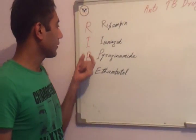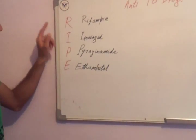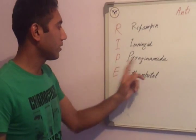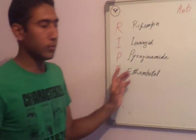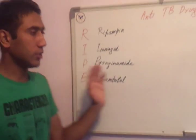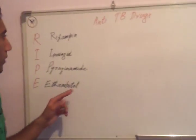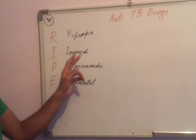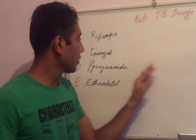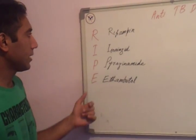These drugs are remembered by the mnemonic RIPE: R for rifampin, I for isoniazid, P for pyrazinamide, and E for ethambutol. These drugs are used as combination therapy for the treatment of tuberculosis. When we use only one or two drugs, tuberculosis can become resistant, so we use all four drugs in combination.